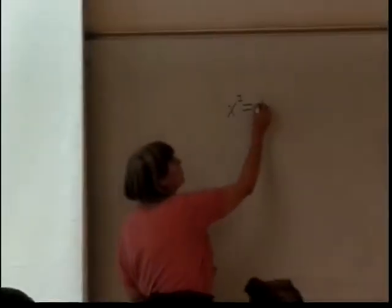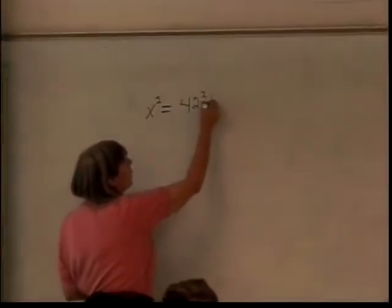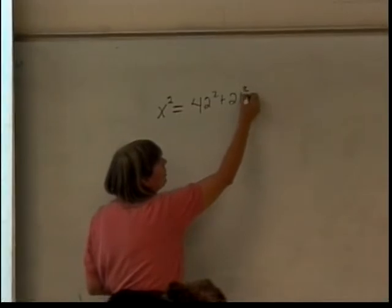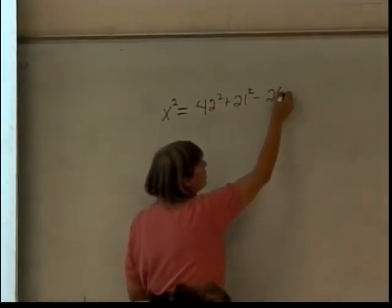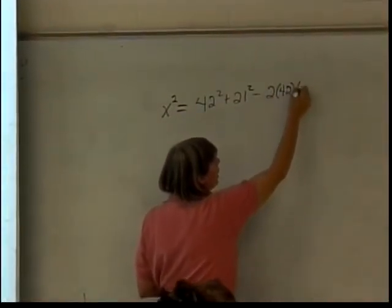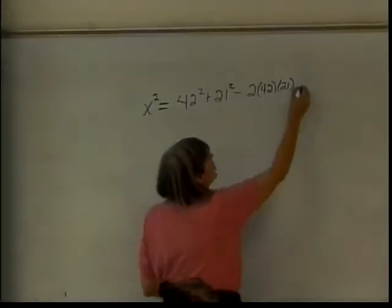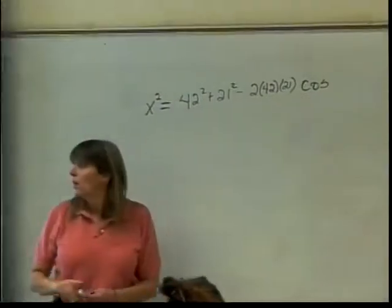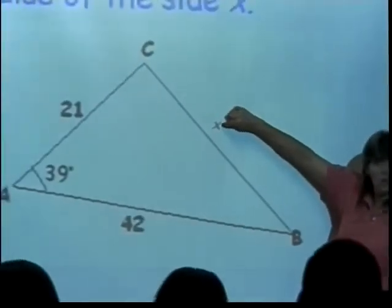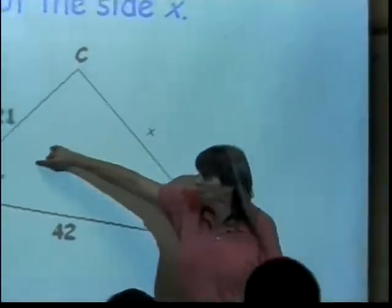So it would be 42 squared plus 21 squared minus 2 times the other two sides. So 42 times 21. Again, the order wasn't important. Times the cosine of, it needs to be the angle that is opposite x. So that would be this angle right here. So 39.